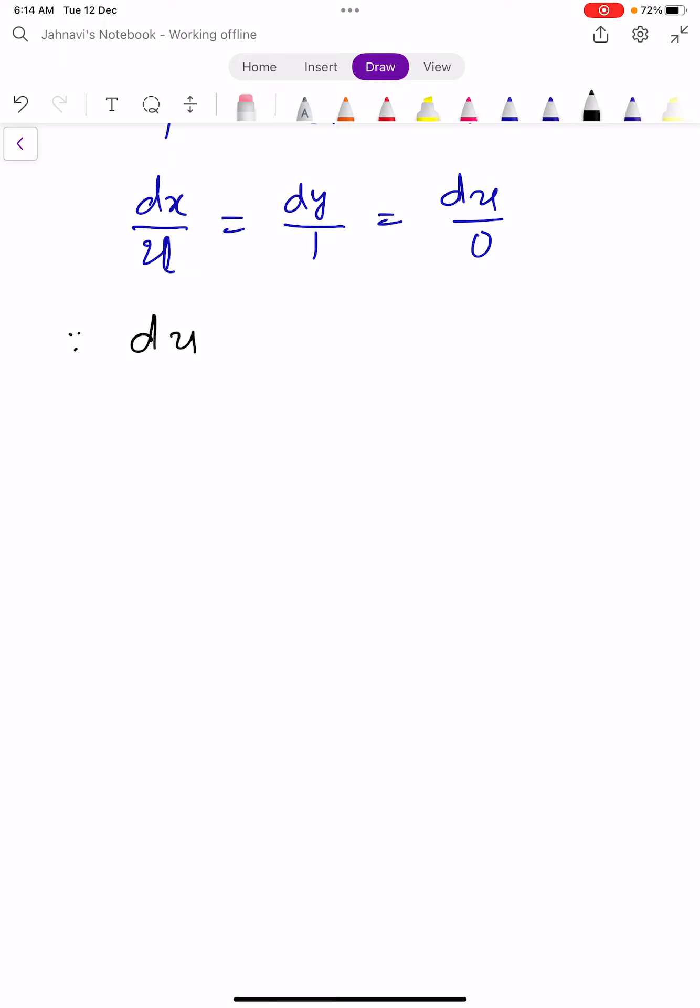Since du/0 implies du = 0, which implies u equals a constant c1, arbitrary constant c1. Let it be equation number 1.